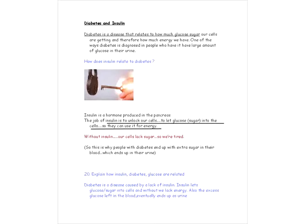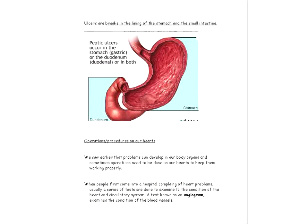So, I have a question here to kind of tie everything together with insulin, diabetes, and glucose. So, it says, explain how those three terms are related. So, here's one possible explanation. Diabetes is a disease caused by a lack of insulin. Insulin lets glucose or sugar into the cells, and without it, we lack energy. Also, the excess glucose left in the blood eventually ends up in the urine. Okay. Another problem we can get is from ulcers. And ulcers are breaks in the lining of the stomach and the small intestine.